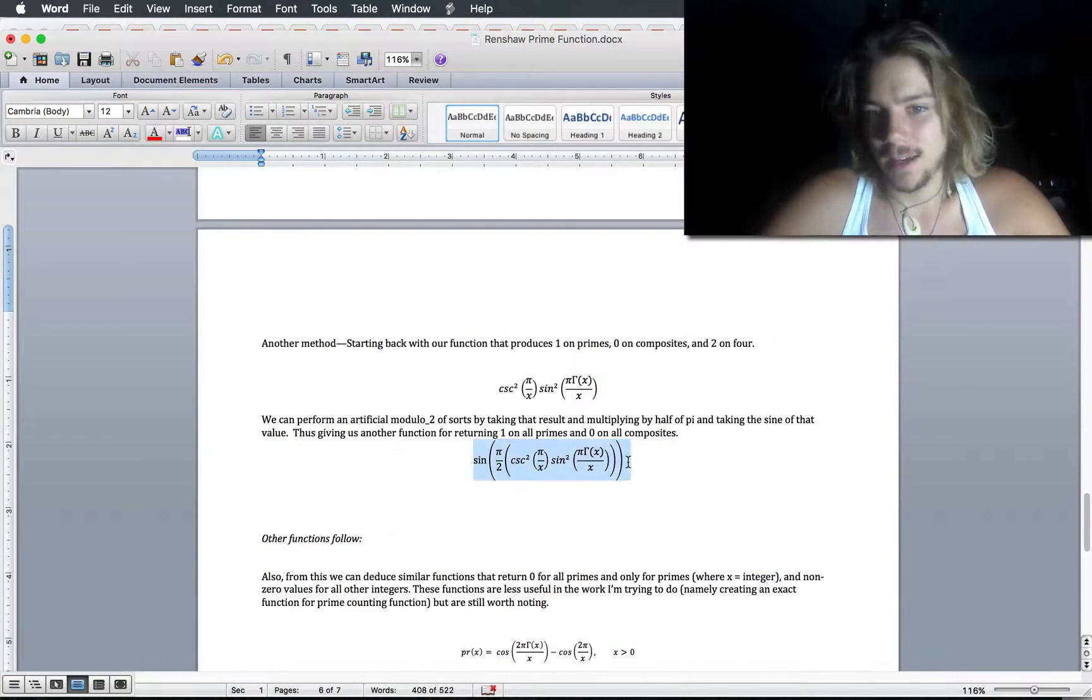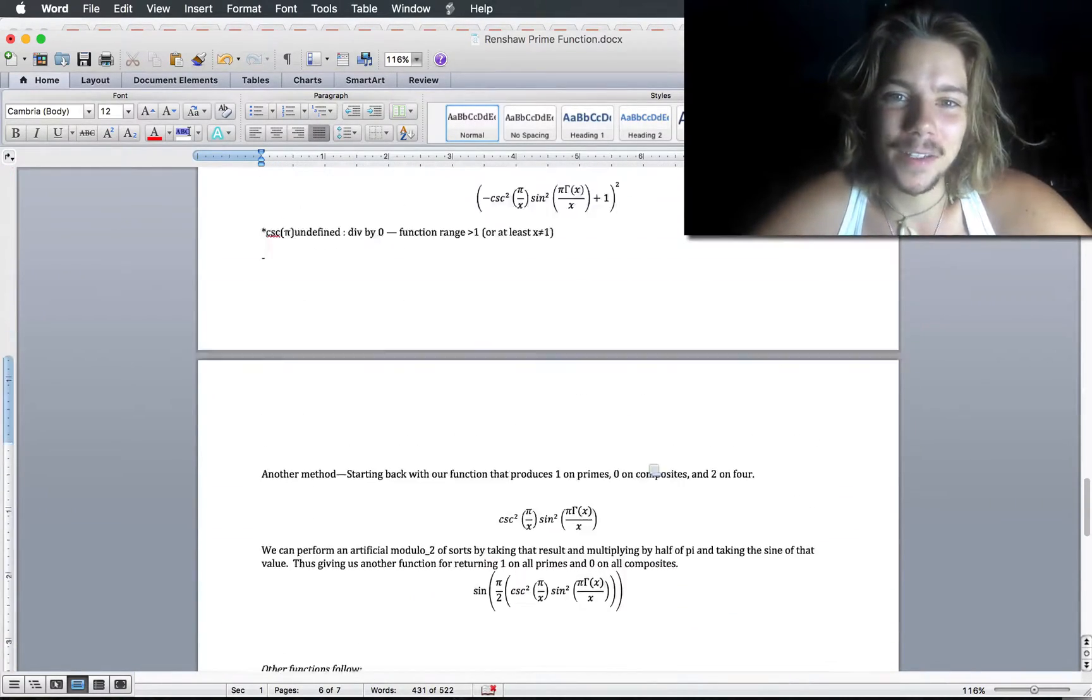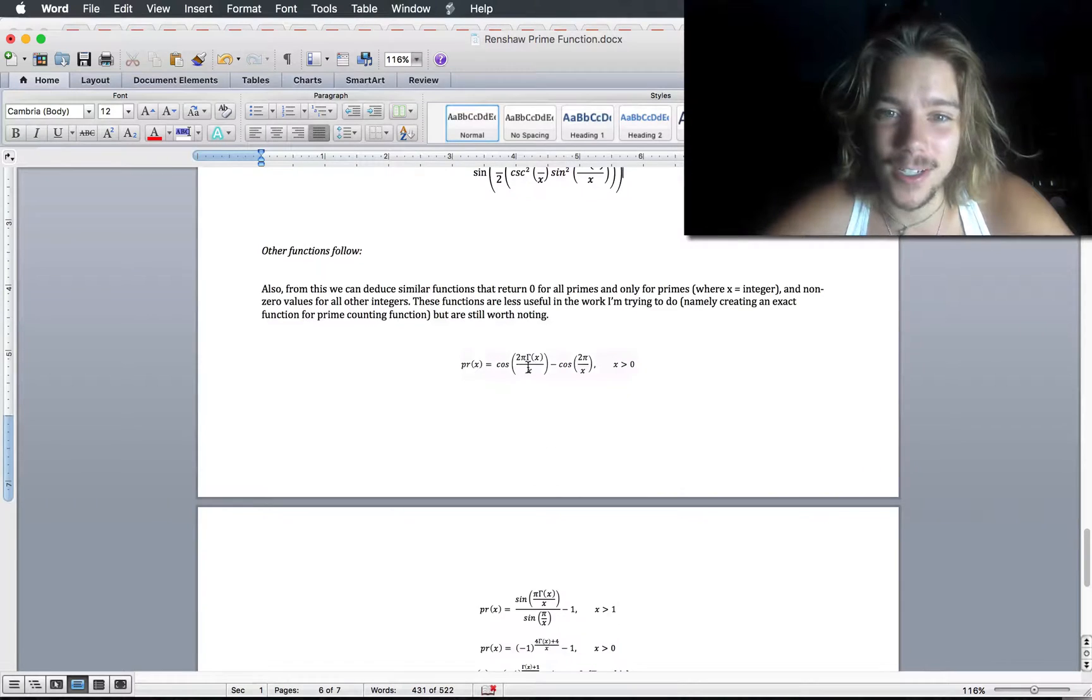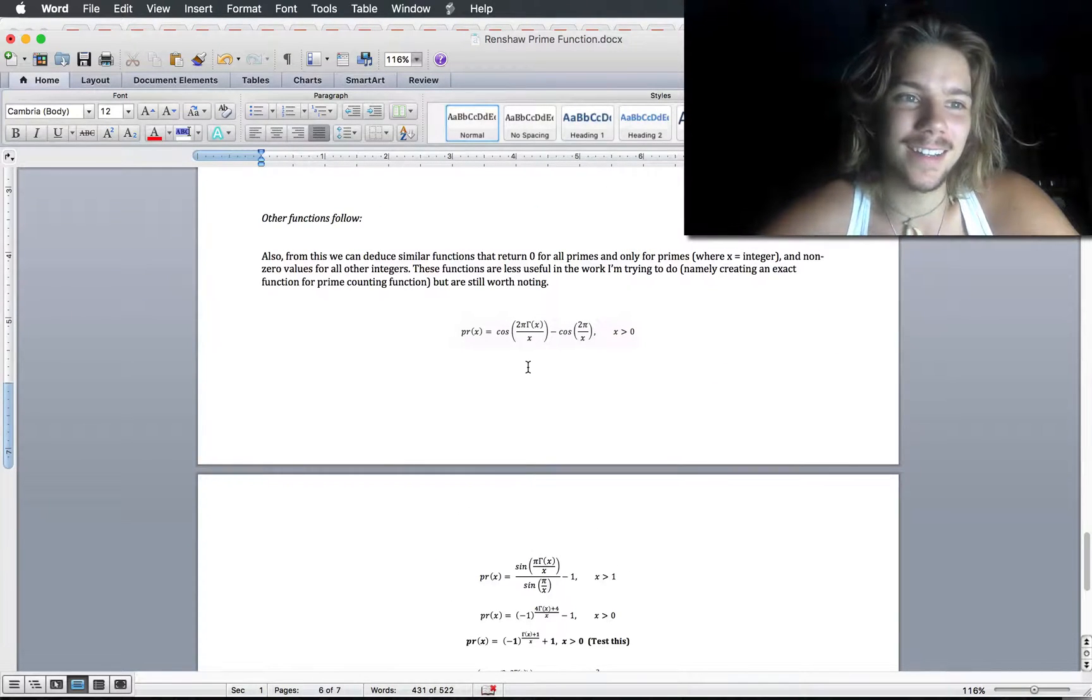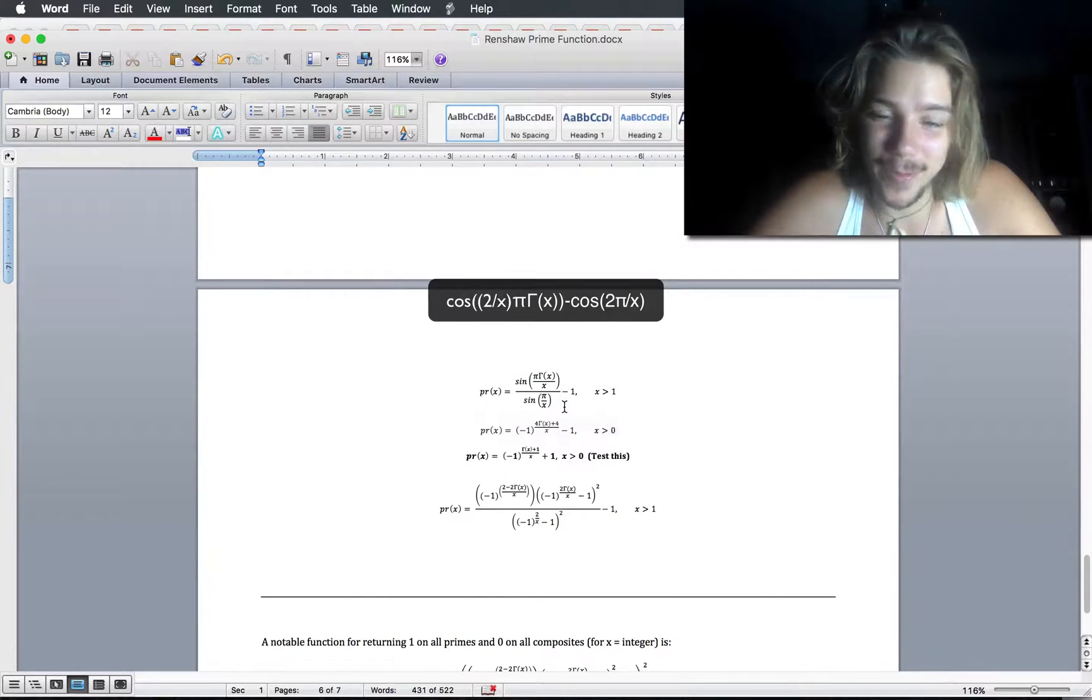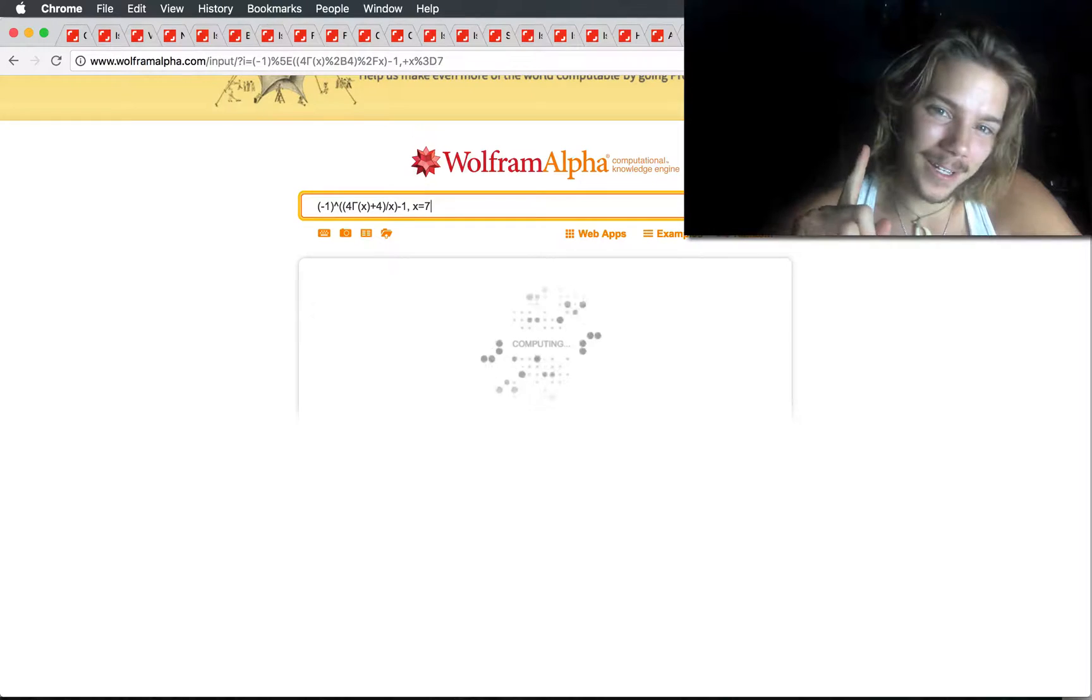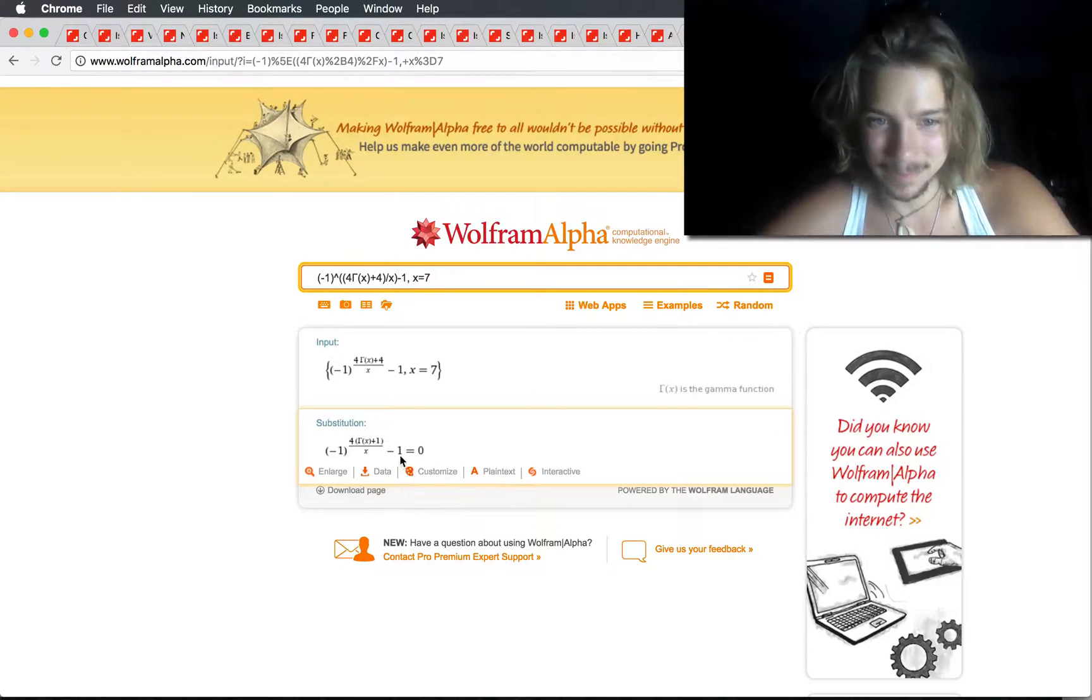Using this function, I've been able to simplify it into some other very cool forms. I have another paper somewhere that goes through the process of how I did that. And using some other details up here, I'm able to leave out other things. In any event, I have some cool functions for primality tests. Some of them return 0 only on primes and then 1 on composites. Most of them return 0 only on primes and then who knows what on composites. So I'll give you an example of my favorite one, which is the one I referenced at the start of the video. It's negative 1 to the 4 gamma x plus 4 over x minus 1.